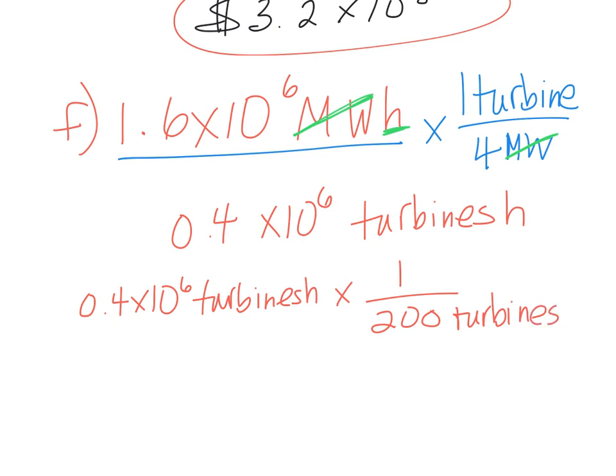I'm going to now divide it by 200 turbines because that's the number of turbines they're going to install. It said way up at the top of the problem: the project will consist of 200 turbines. Now we're going to divide to get our number of hours that they're going to have to operate. So 0.4 divided by 200 gives us 0.002. Don't forget to add times 10 to the 6, and now our turbines cancel and we have this many hours.